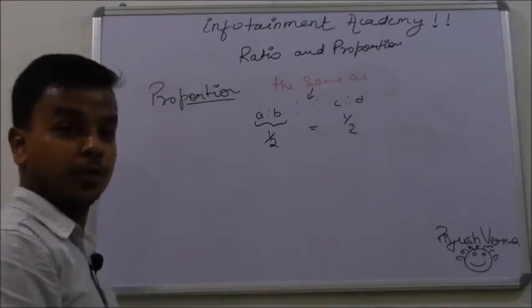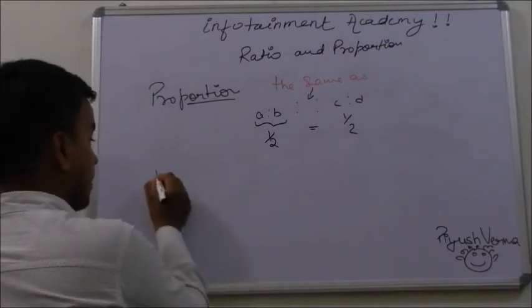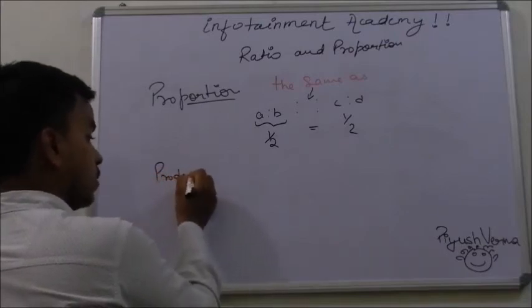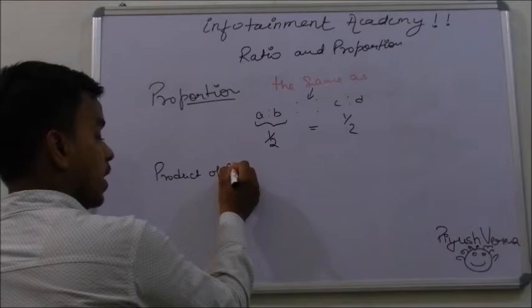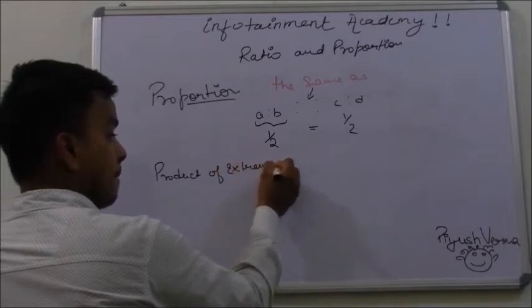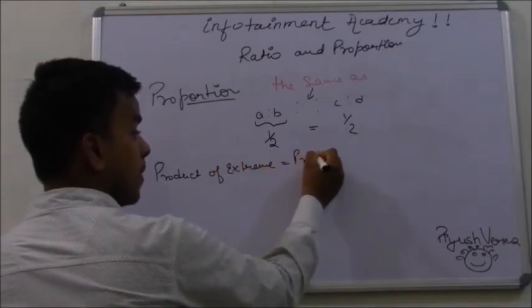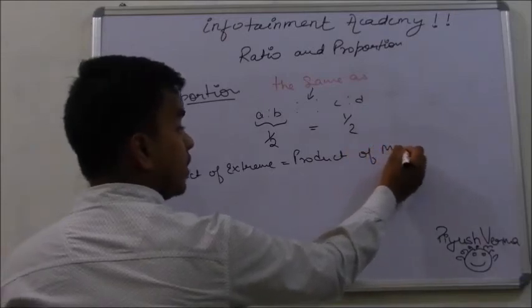In order to solve the question of proportion, we are having a formula: product of extremes should be equals to product of means.